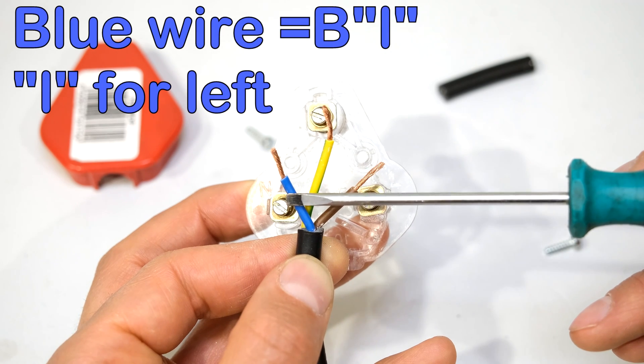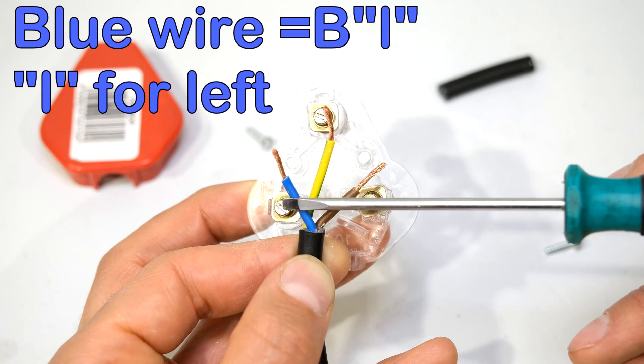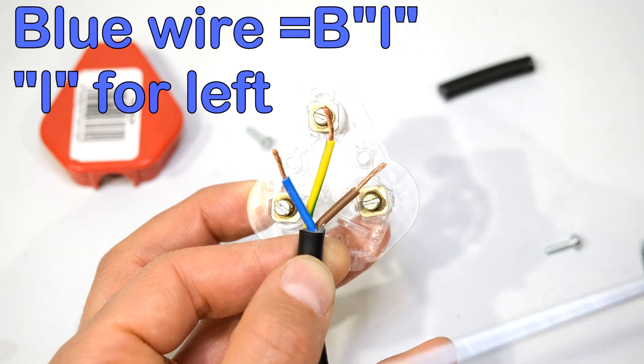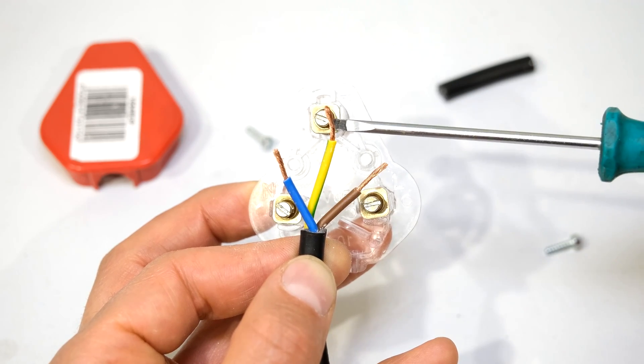The blue wire goes to the left. Listen to the word. Blue. B-L, L for left. The neutral wire goes to the left. The earth wire is the longer one that goes in the middle.